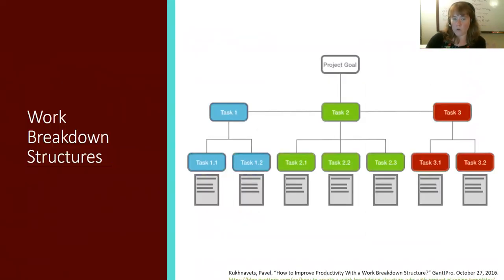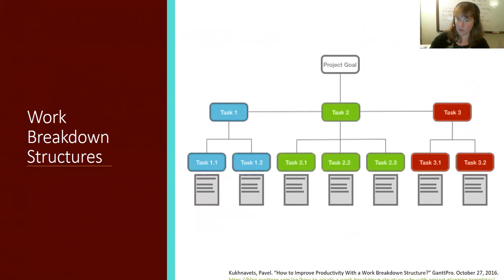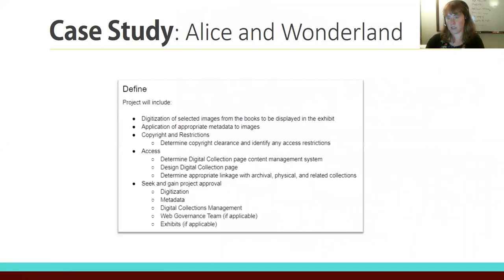The next stage is to bring all the people together for an initialization meeting, because what you're trying to create is what's called a work breakdown structure in formal project management — which is more or less just creating your task list. We have project goals and deliverables, so: what needs to happen to accomplish each deliverable? What needs to happen next? And what after that? Break it down. For digitization of selected images, what does that mean? Who's going to do it? Break the project into chunkable areas and get those task lists — going from scope to task.